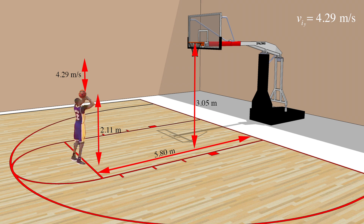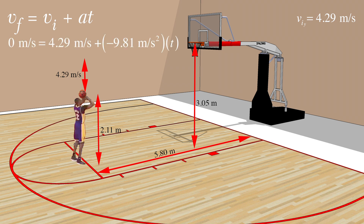Now that we know the initial velocity in the y direction, we can find the time it takes for the ball to reach the top of its trajectory using the first equation. We can plug in the values we know to find what we're looking for. After solving, we know that time equals 0.44 seconds.